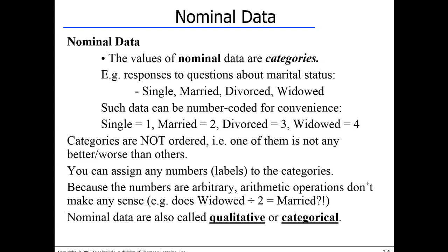Because the labels are random, calculations with nominal data don't make sense. For example, if I have one person who is single (coded 1) and another who is divorced (coded 3), the average is 2 — which means 'married' — but I have nobody who is married. That's nonsensical. The values assigned to categories are our arbitrary choice and are changeable. I could scramble them and have an equally valid labeling system.